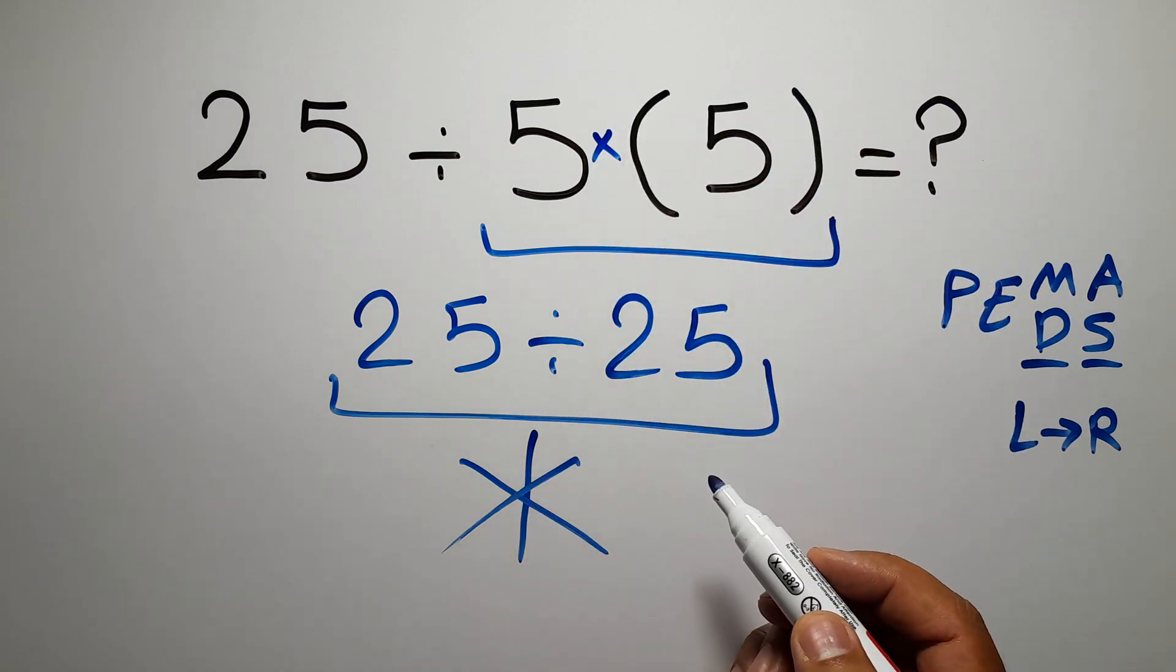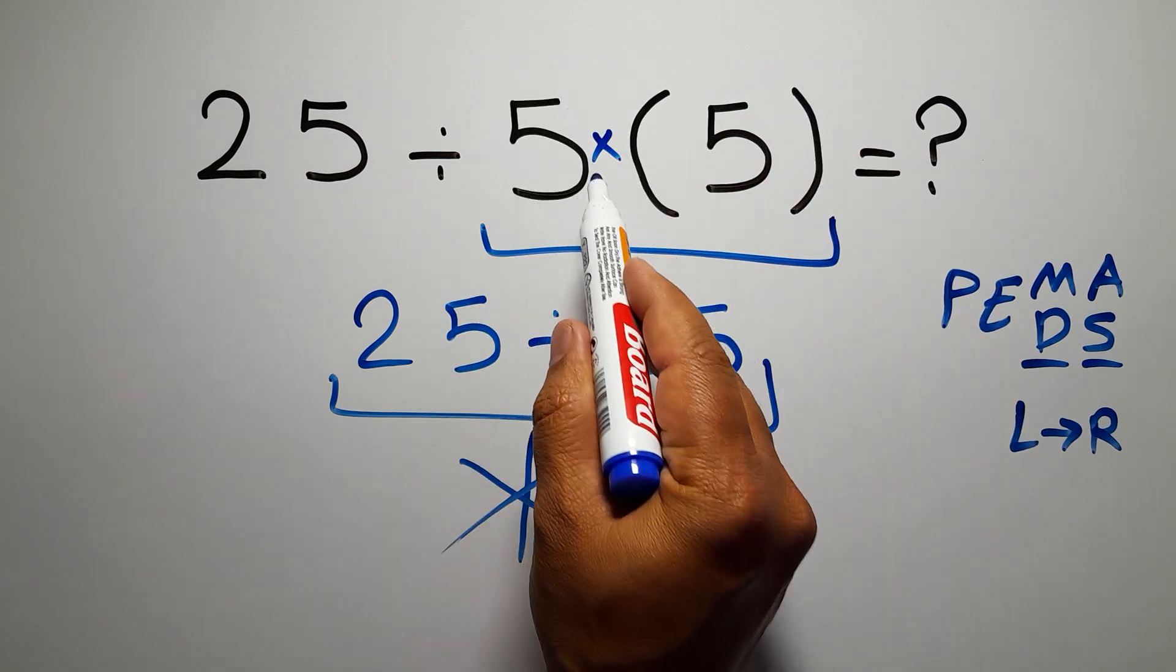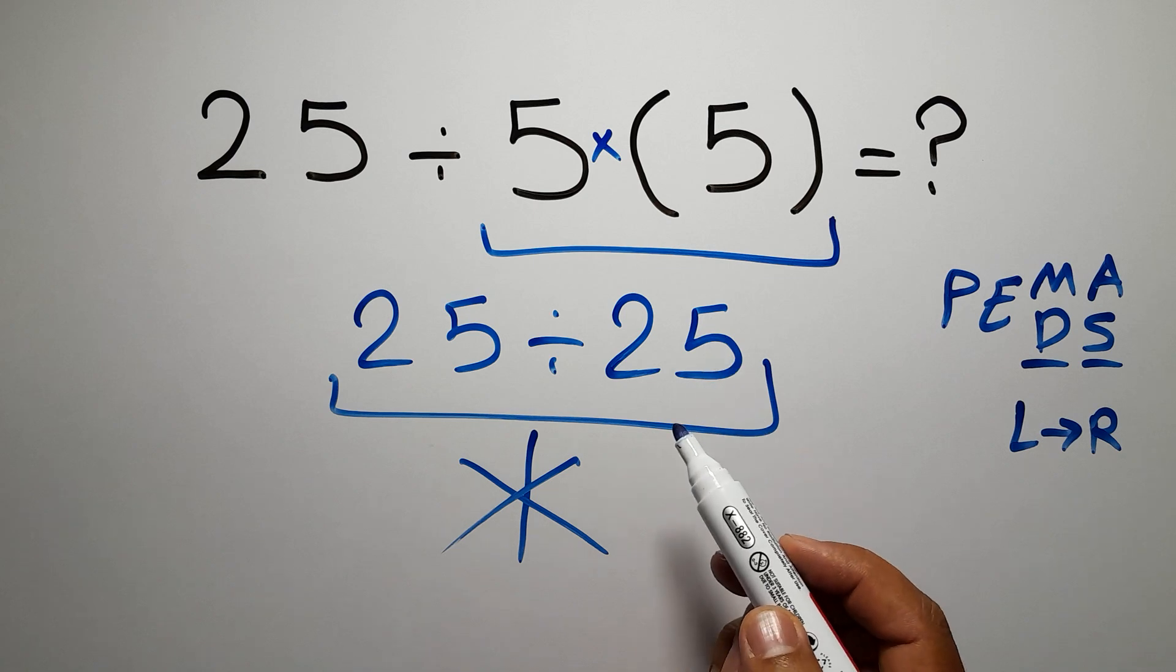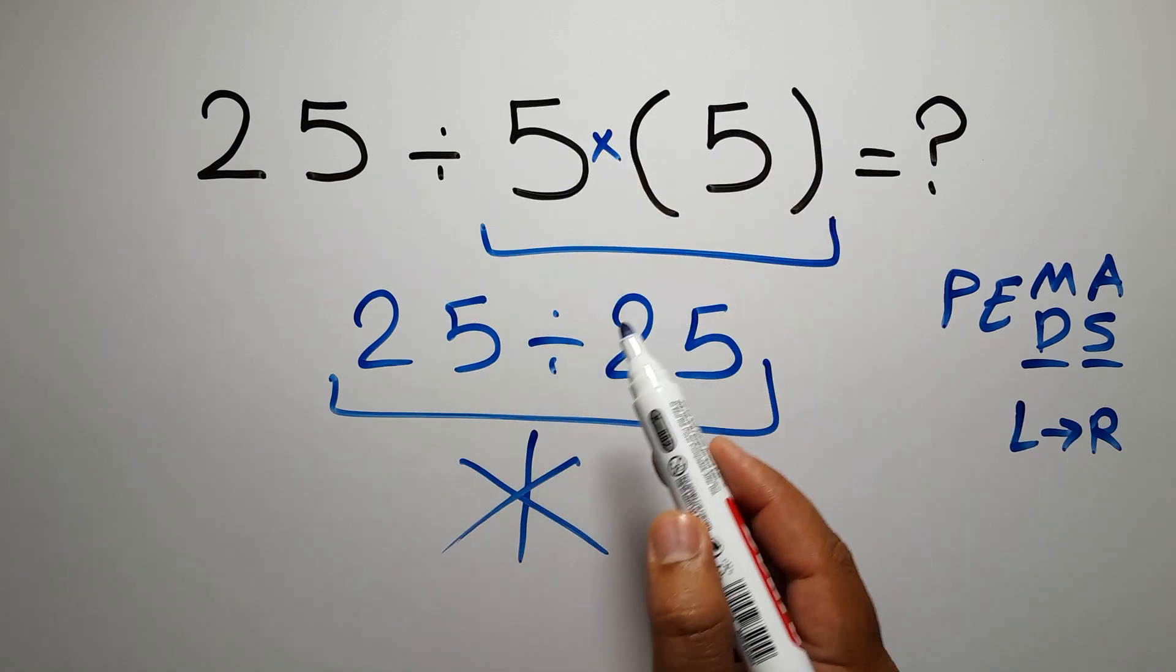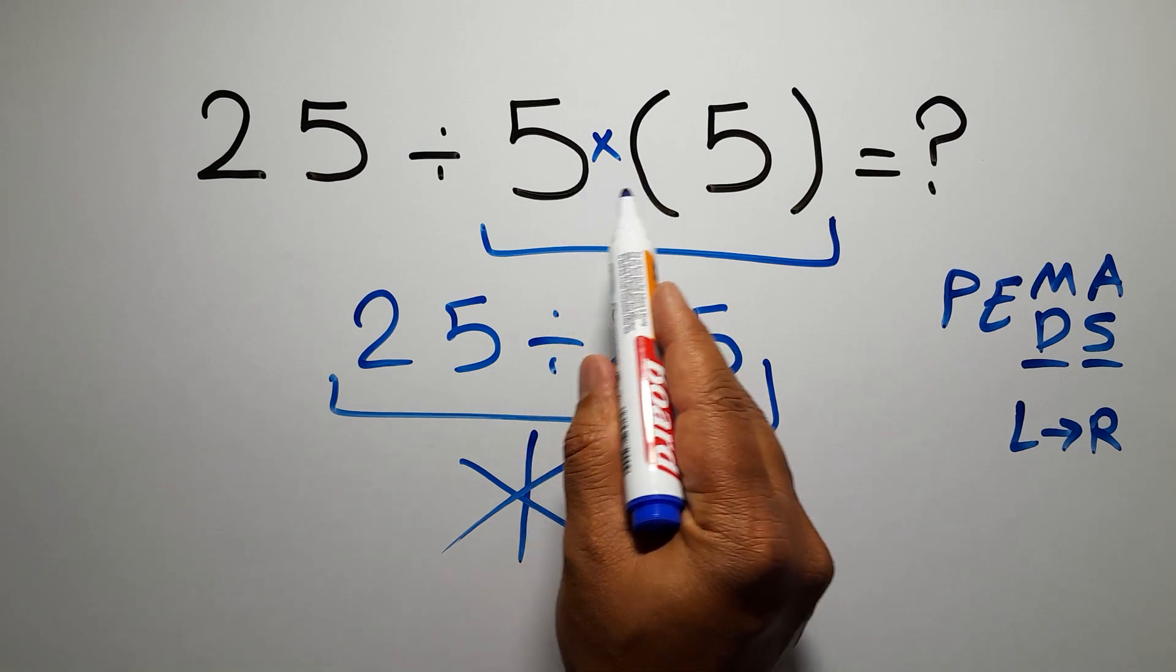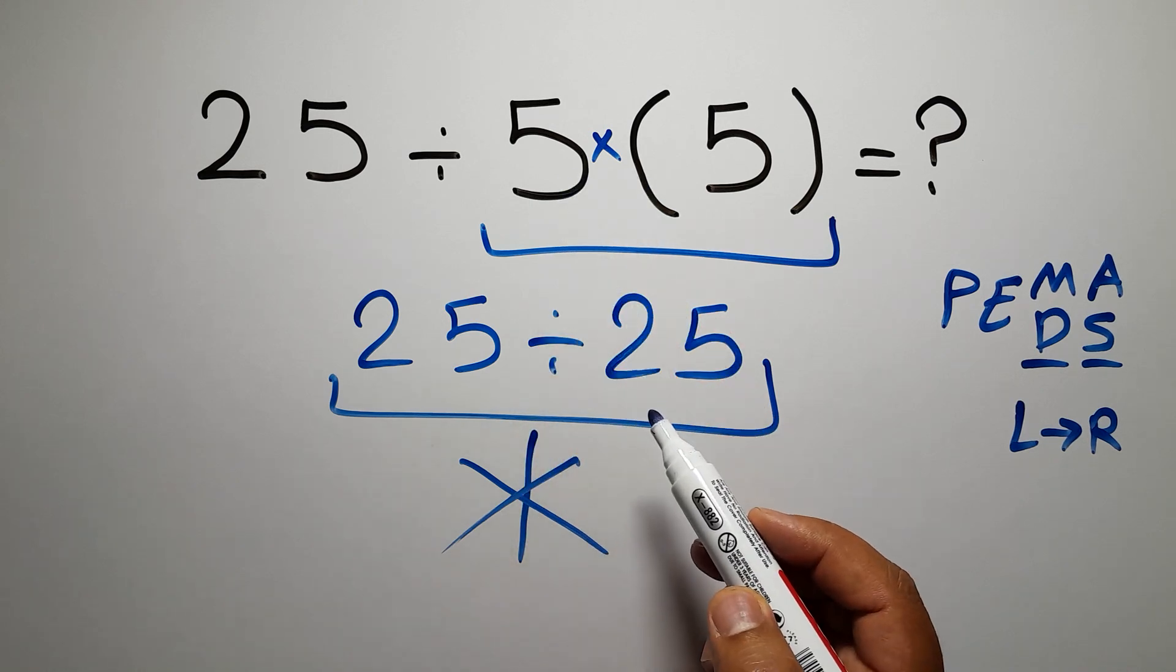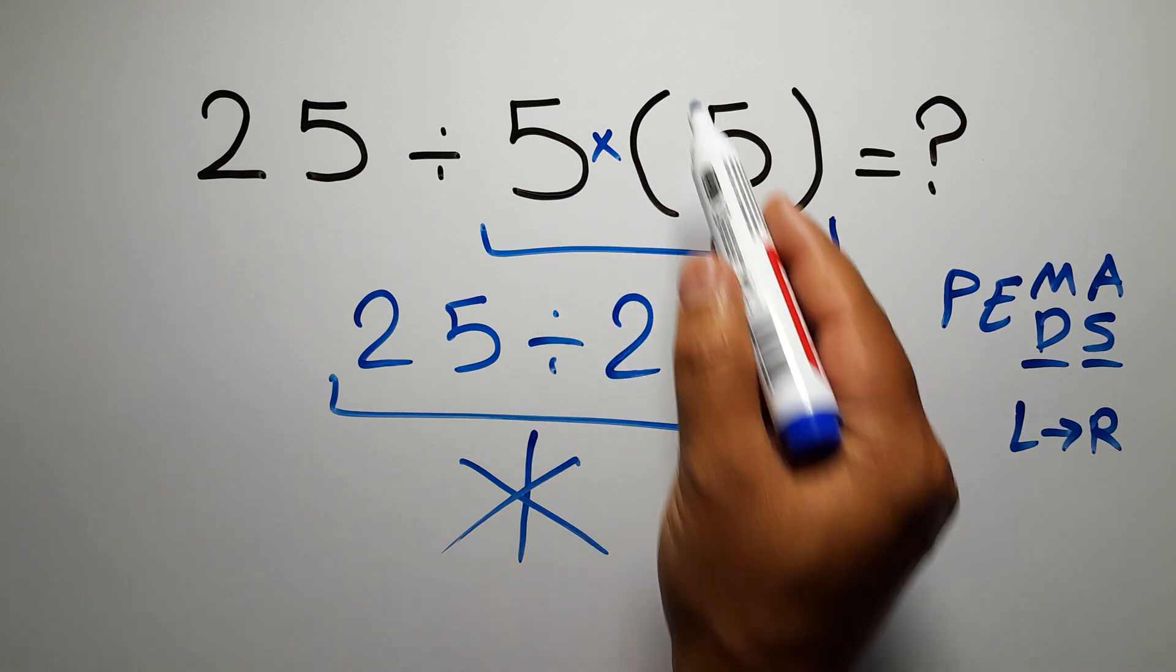parentheses. We need to pay attention that here we have a multiplication, because in mathematics when a number is placed next to parentheses it means multiplication, and we usually don't write the multiplication sign for brevity. Inside these parentheses